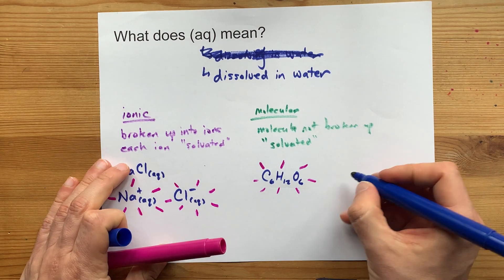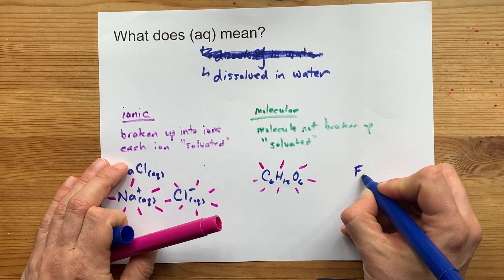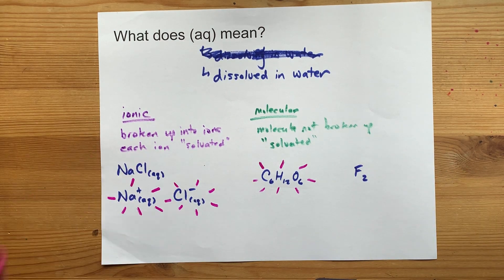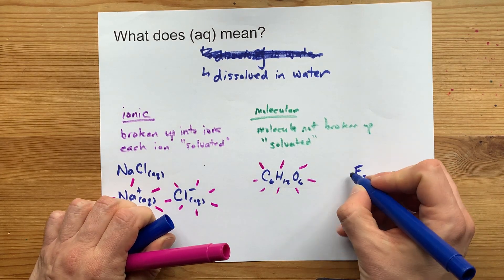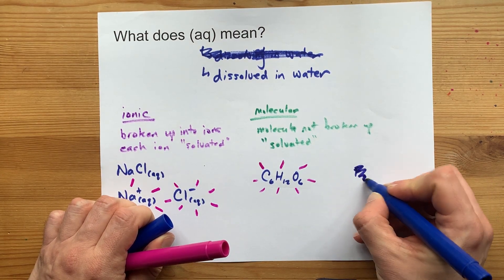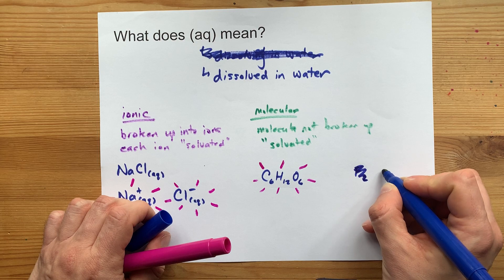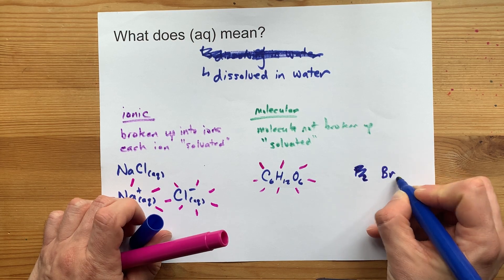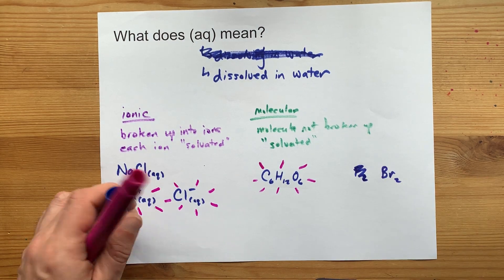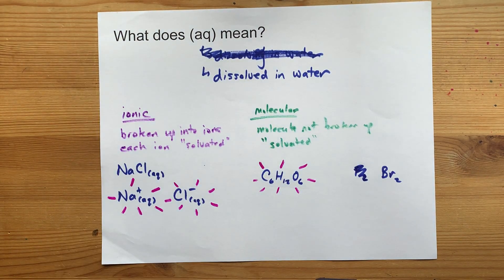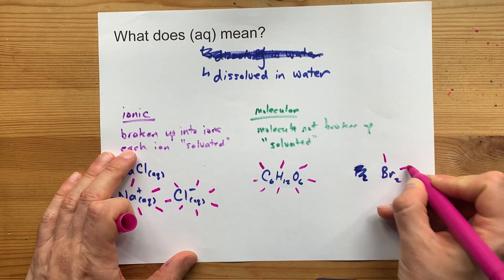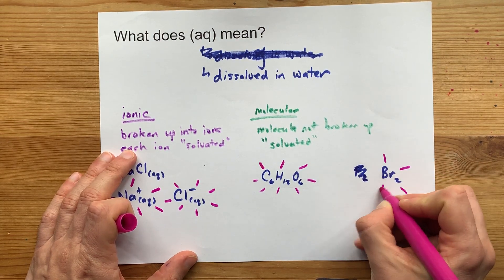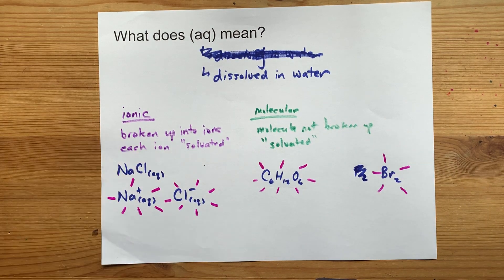You can even get nonpolar things to dissolve very slightly, like F2 gas — well, actually that's a terrible example because it will react. Perhaps I was thinking of Br2, a liquid. That probably also reacts, but whatever. The point is, some molecules that might stay intact also get surrounded by water molecules.